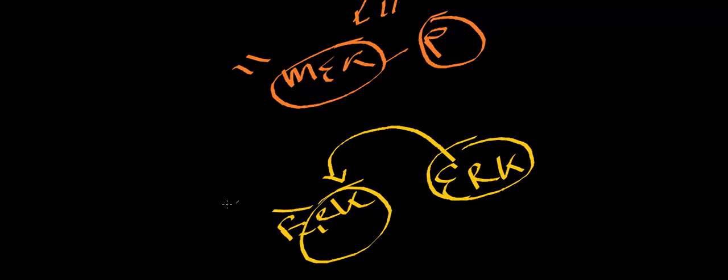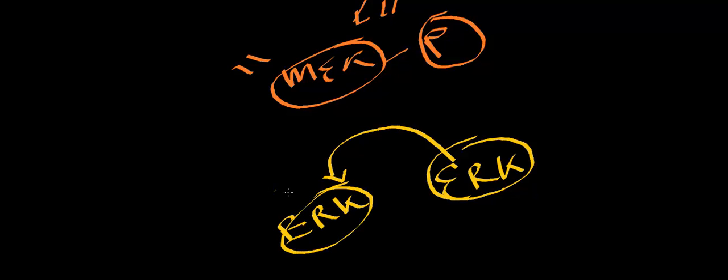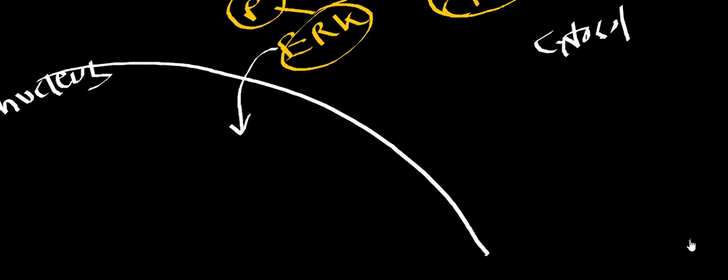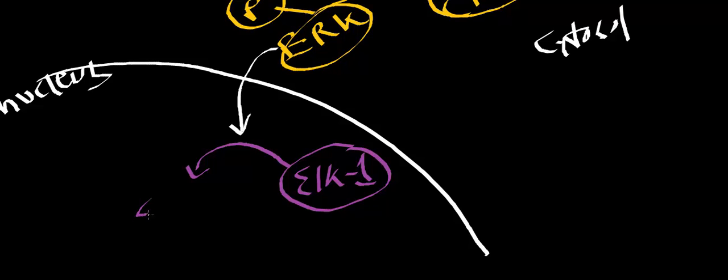ERK becomes phosphorylated by MEK. ERK in the phosphorylated state can actually enter the nucleus. So ERK comes into the nucleus and it's going to phosphorylate a protein called ELK1.